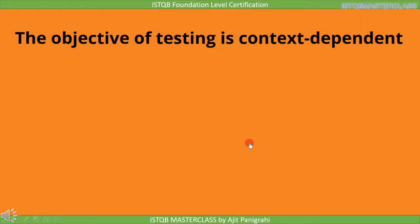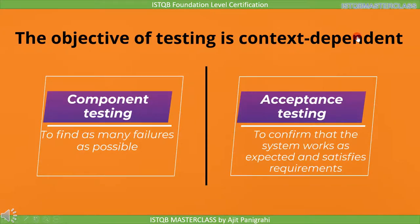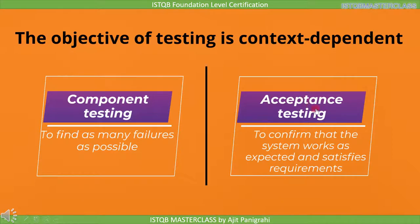Until now we discussed general testing objectives, but the objectives are context dependent. For example, at the component testing level your objective is to find as many defects as possible so that they are not found during operational use, whereas at the acceptance testing level your objective is to check if the system works as per the customer's requirement.